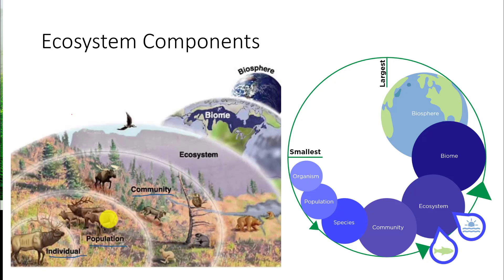Within populations, we have individuals. When you do research, the actual data you collect will often be on the individual, but you want to address scientific questions about how the population and community are behaving. For example, if we put a tag on an elk, we want to know how that elk is behaving in the community and at the ecosystem at large, and then tie that into larger studies of biomes.